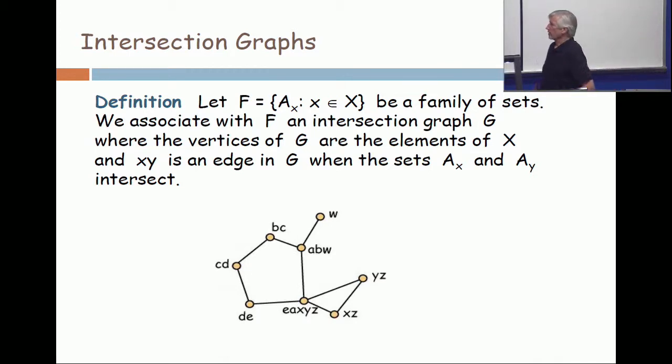All right, so I have a family of sets, and then it's an indexed family. So what that means is that it's okay to have the same set in there more than once. So what would it be if I have a set, and I have another set in the family that's the same set? Well, then they intersect, and anybody that's a neighbor of one is a neighbor of the other. That's all it means.